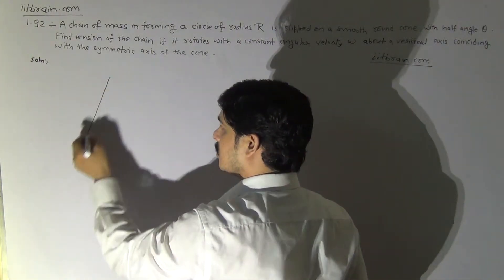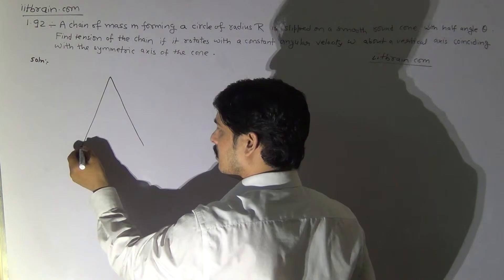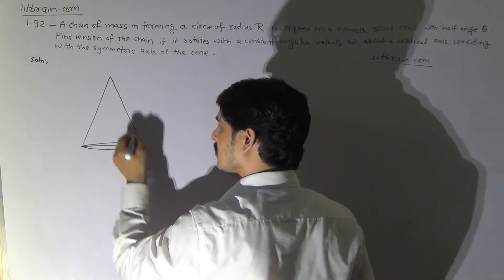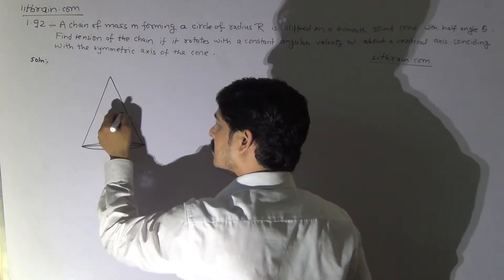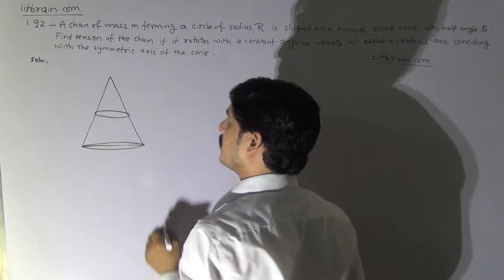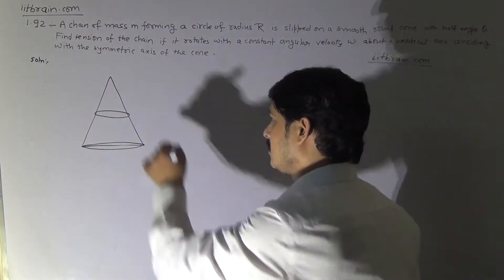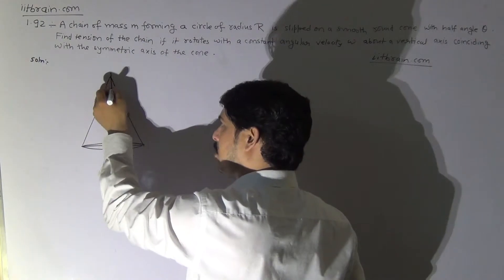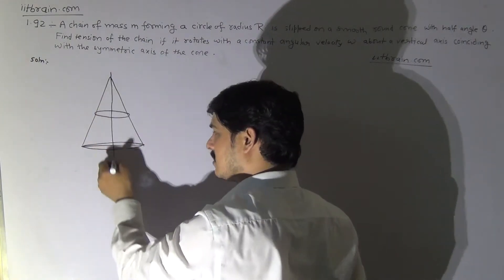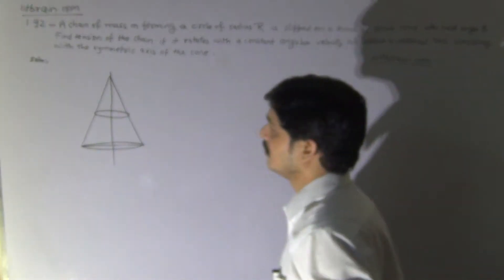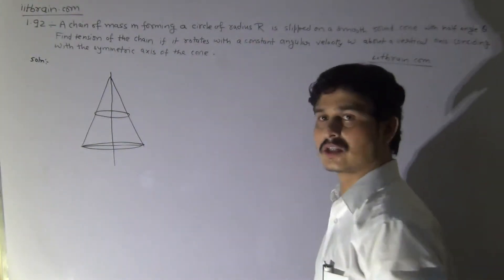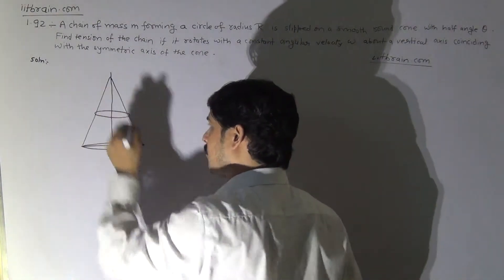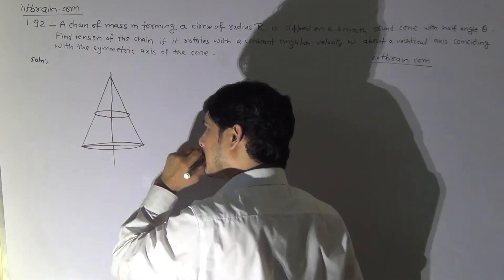This is the cone and there is a circle of mass on the cone. This circle of mass is revolving about its axis, and the axis coincides with the axis of the cone.